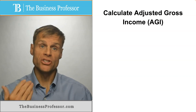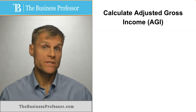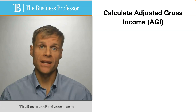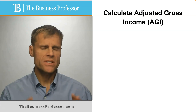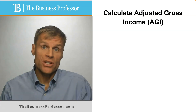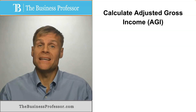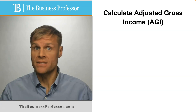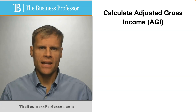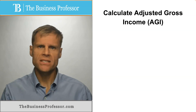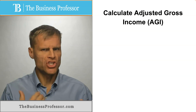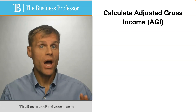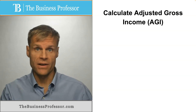What is adjusted gross income and how do you calculate it? Adjusted gross income is an income tax concept — individuals are taxed on their adjusted gross income, not all of their income.